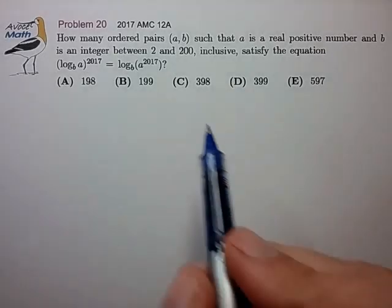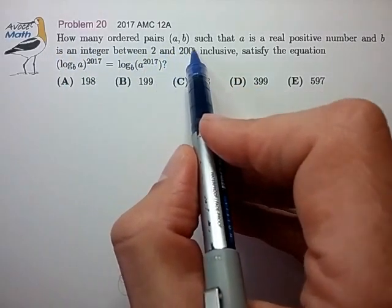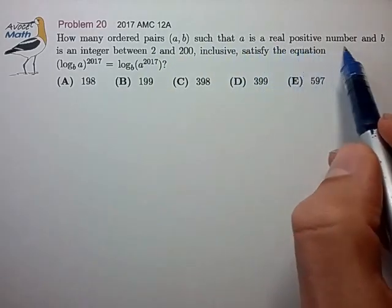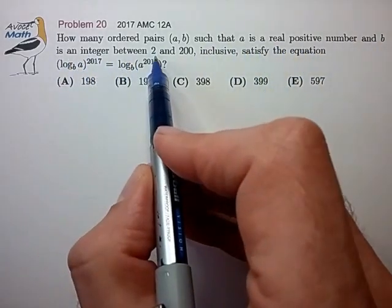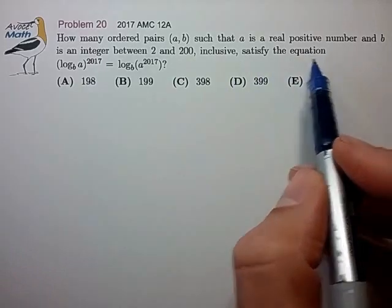Hi, this is problem 20 from AMC 12A. How many ordered pairs (a,b) such that a is a positive real and b is an integer from 2 to 200 satisfy the equation shown?